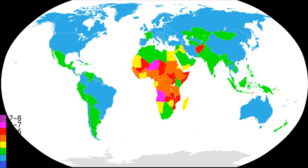Voluntary human extinction movement. Fiction references include: Logan's Run (state-mandated euthanasia at 21 for all people to conserve resources), Make Room! Make Room!, Infinity War (antagonist Thanos kills half of all living things throughout the universe in order to maintain ecological balance), and the Shadow Children series (families are allowed two children maximum, and 'Shadow Children' are subject to be killed).